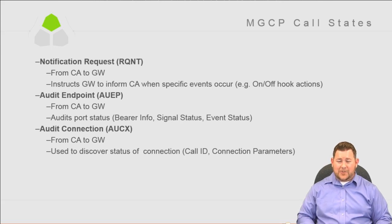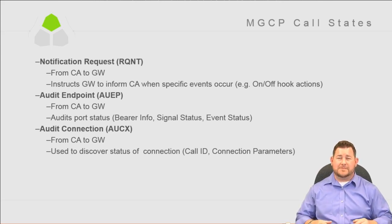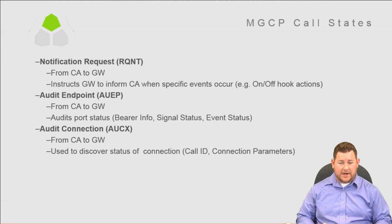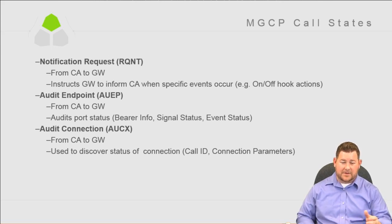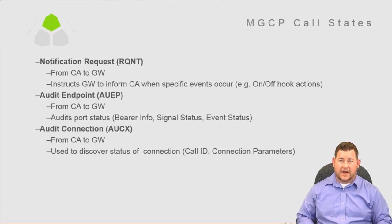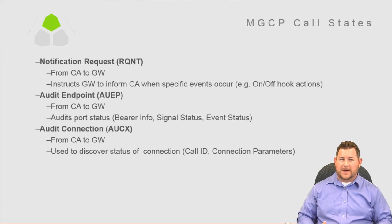Continuing MGCP call states: Notification Request, RQNT, is from CUCM to the gateway. It tells the gateway to inform the call agent when specific events occur, such as on/off hook actions. If the call agent sends a request notify, it wants to know about specific events — it requests notification from the gateway. A good way to remember it: Request Notify means the call agent is requesting to be notified by the gateway.